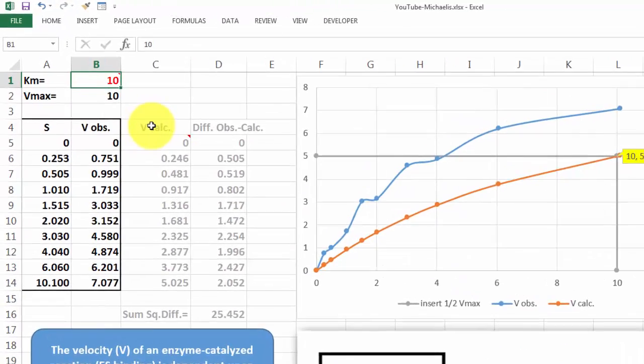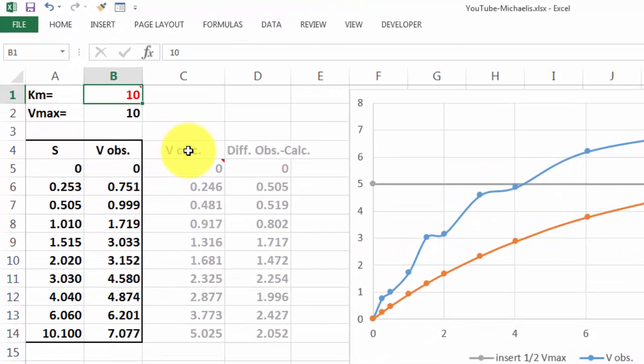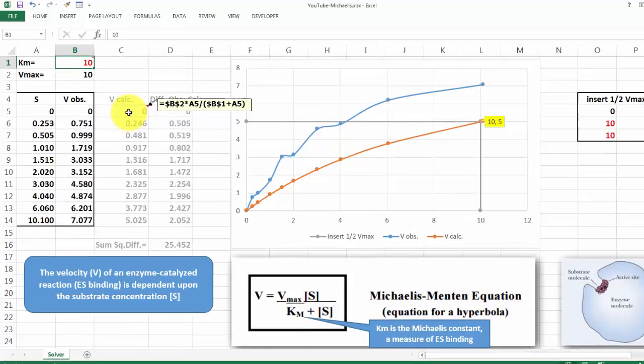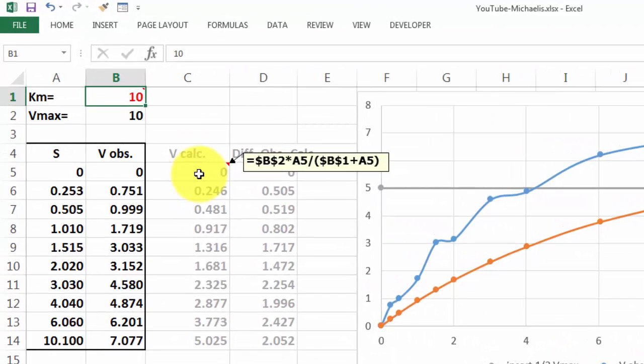First of all, you are going to create a column where you predict what the velocity would be based on the Michaelis-Menten equation. So I put here that Michaelis-Menten equation, that is B2, which is the maximum velocity, times the substrate concentration, divided by the Michaelis constant plus the substrate concentration. And we copy that down.